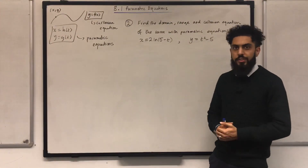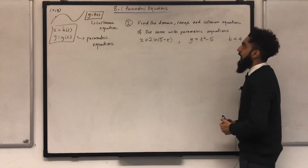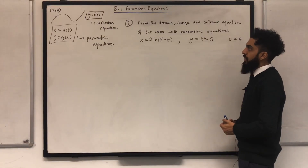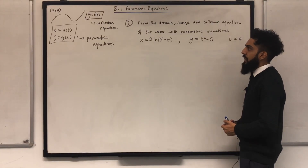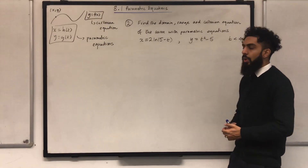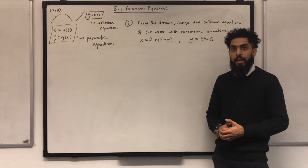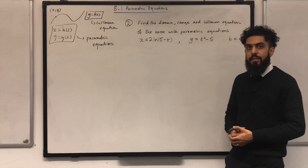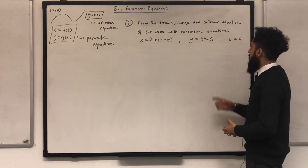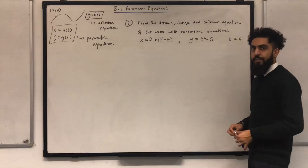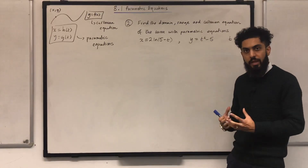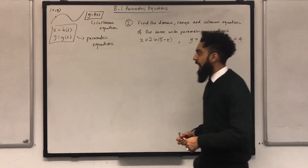Let's have a look at question 2. It says find the domain, range and Cartesian equation of the curve with parametric equations x equal 2 ln(5 minus t), y equal t squared minus 5, with restriction t is less than 4. I'm going to start with the domain, which represents x.